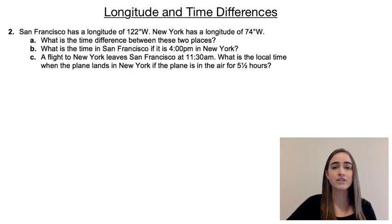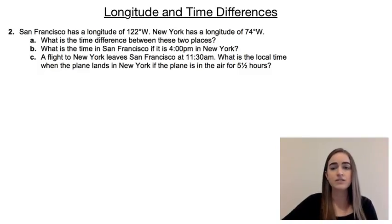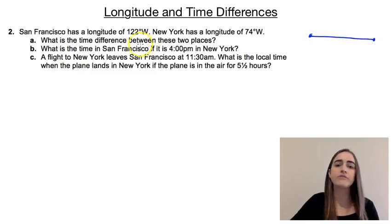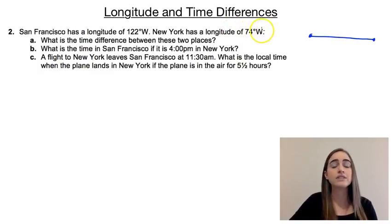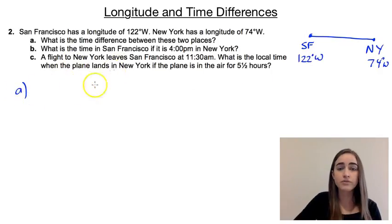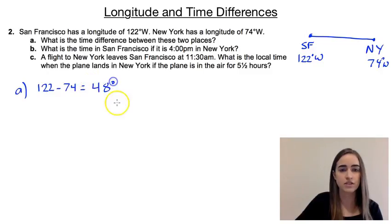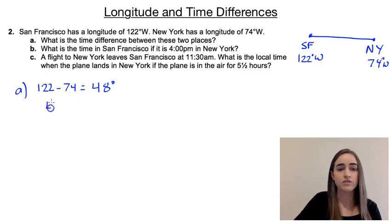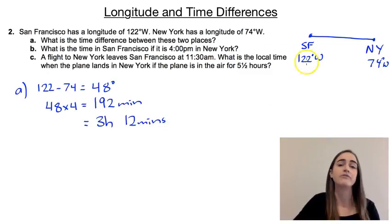For our second example: San Francisco has a longitude of 122 degrees west, and New York has a longitude of 74 degrees west. Part A asks for the time difference between the two places. I'd recommend drawing a quick diagram — San Francisco at 122 degrees west is further west, and New York at 74 degrees west is further east. The difference in longitude is 122 minus 74, giving us 48 degrees. Every one degree is 4 minutes, so 48 times 4 gives us 192 minutes, which is 3 hours and 12 minutes difference, theoretically.